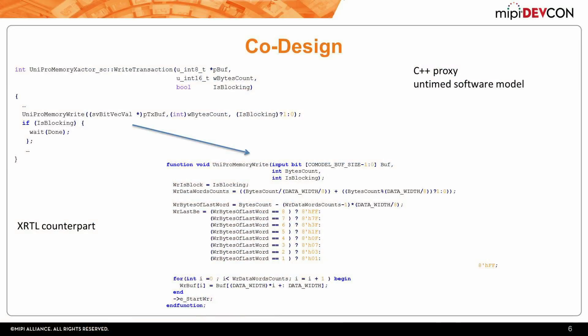This is a code snippet from a C++ proxy — a write transaction issued from the C++ proxy. This is an untimed software model that converts DME and network layer steps from high-level transactions into low-level pin activity through a DPI function called in the XRTL Transactor. This is just a function call that is moved into the XRTL Transactor, which decomposes the transaction and then calls an event in the hardware — in the transactor itself — to start applying the content of the message.